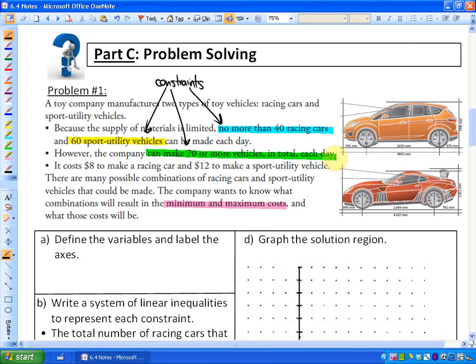So those would be the constraints. If we read on, it says it costs $8 to make a racing car and $12 to make a sport utility vehicle. It's not a constraint. It's just a fact. There are many possible combinations of racing cars, and it says the company wants to know what combinations will result in minimum and maximum costs.